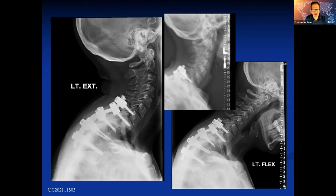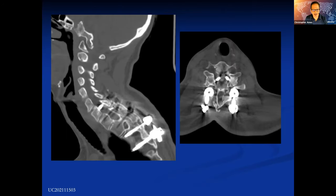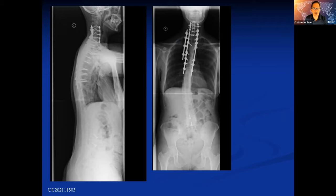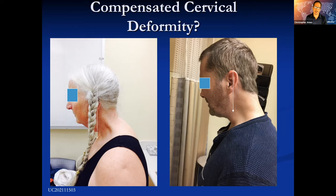You can see the translational deformity of the head and the fact that it's rigid. She underwent a correction with a posterior three-column osteotomy. And we have this type of patient who doesn't even seem, at least from a clinical appearance standpoint, to have a cervical deformity because it's completely compensated.